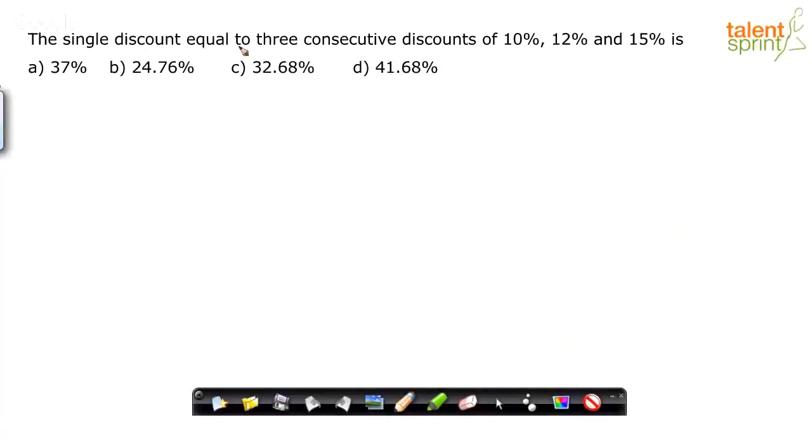The single discount equal to three consecutive discounts of 10%, 12% and 15%. So basically, there are three consecutive discounts being given, right?